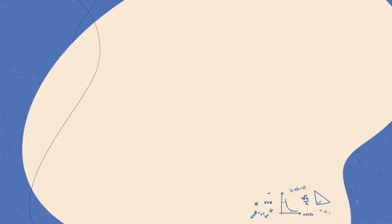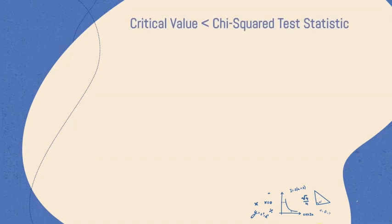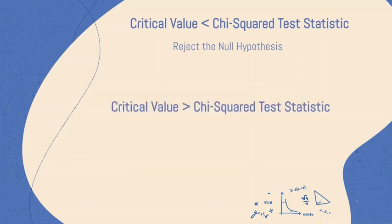If our critical value is less than our calculated Chi-squared value, then we can reject our null hypothesis. On the other hand, if our calculated Chi-squared value is less than our critical value, we fail to reject our null hypothesis.